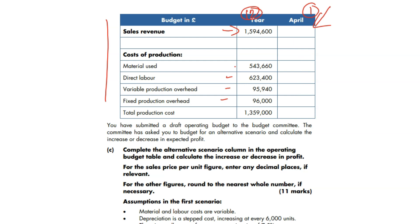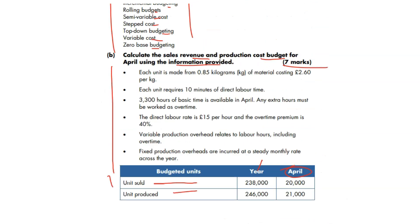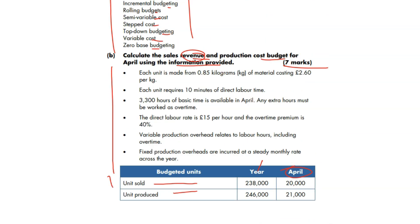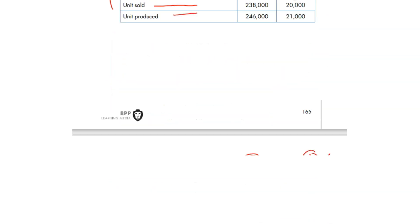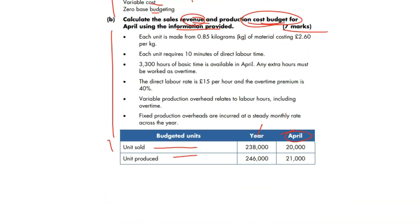Let's go to the top of the question and calculate the sales revenue and production cost budget for April. Each unit is made from 0.85 kilograms of material costing £2.60 per kg — keep that in your head.